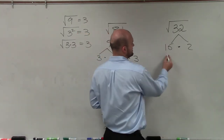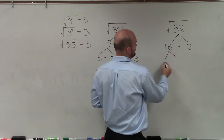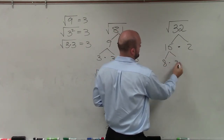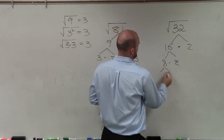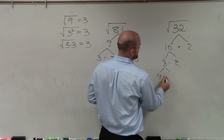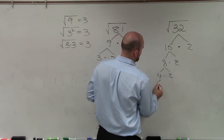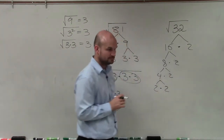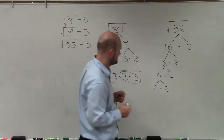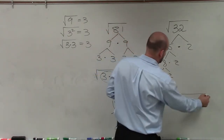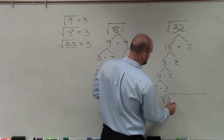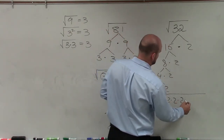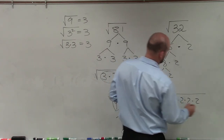So therefore, I have 16 times 2, which is 8 times 2, which is 4 times 2, which is 2 times 2. So therefore, I can do this as 2 times 2 times 2 times 2 times 2.